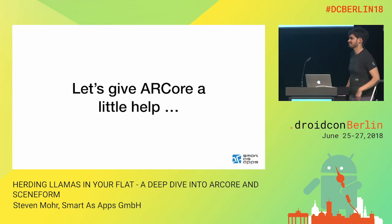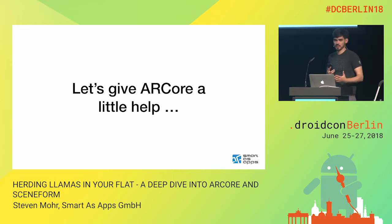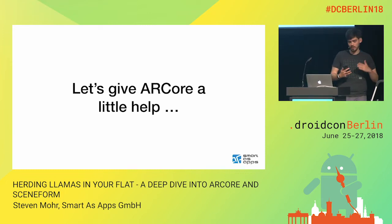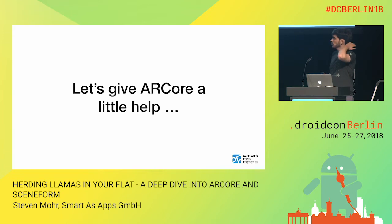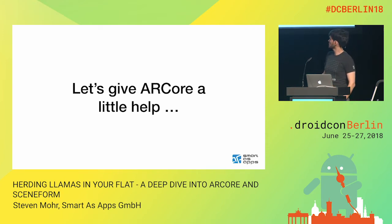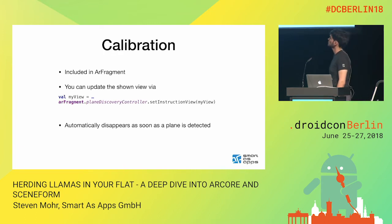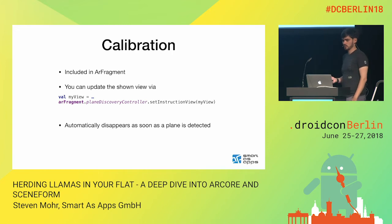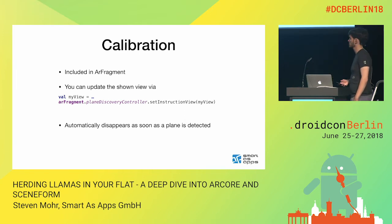ARCore needs some information to recognize the world and know where the planes are. A good start is to give it a little help, which means telling the user to move the phone so the camera has different angles and ARCore can start finding planes and feature points. Luckily, if we use the AR Fragment, this is included. We have the possibility to change the view shown to fit your brand, and it automatically disappears as soon as a plane is detected.